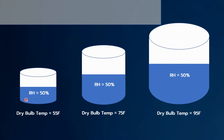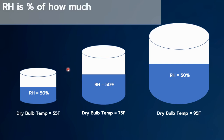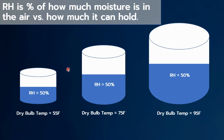They all have a relative humidity of 50% — they all have the same value — but look at the amount of moisture in each of these cylinders. It's greatly different. So what that tells us is RH is a percentage of how much moisture is in the air versus how much it can hold. It's not a good value to tell you the absolute amount of moisture in the air. Think of relative humidity as how full is the container.